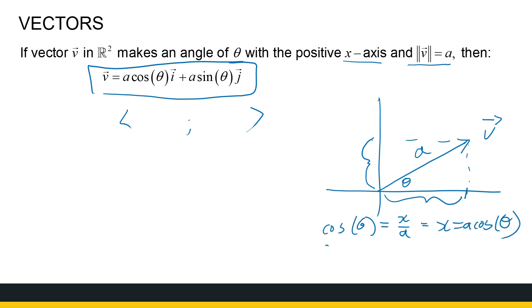Sin of theta is y over a. So, therefore, if I want to get to y, it's a sin theta. So, if I've got the angle with the positive x-axis and the magnitude, I can get the components. It's a cos theta and a sin theta. So, that's quite handy. If I don't have the x and the y, I've got the magnitude and the angle, then we can use that.